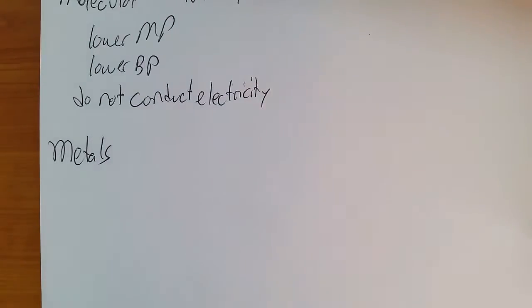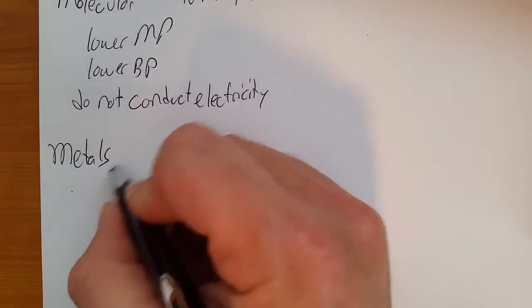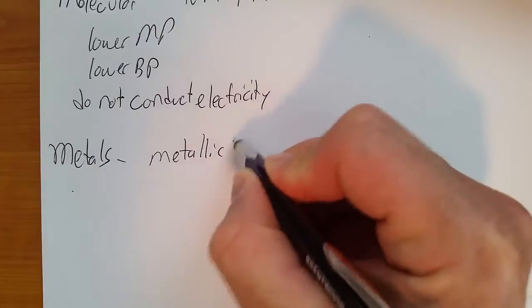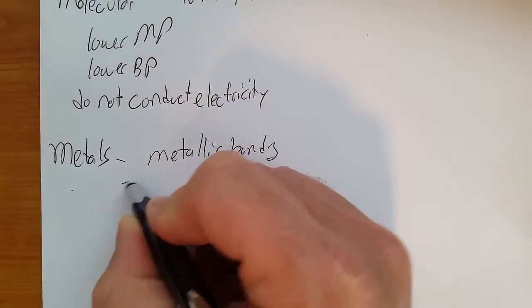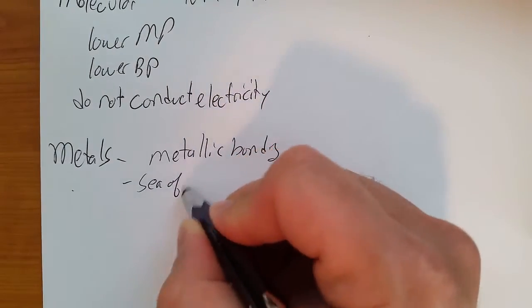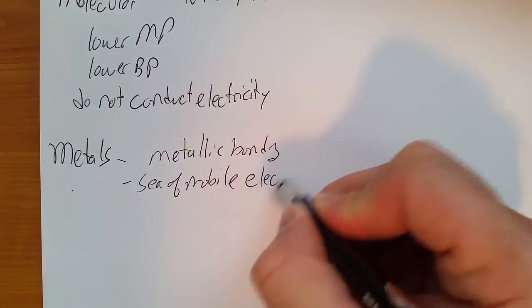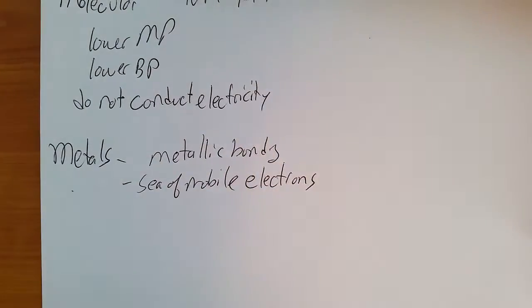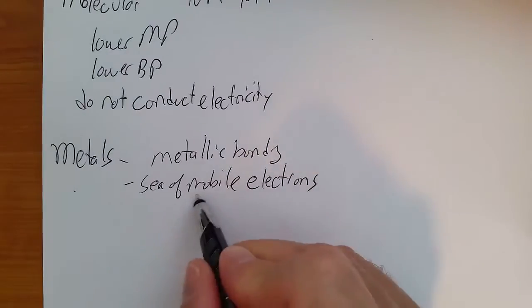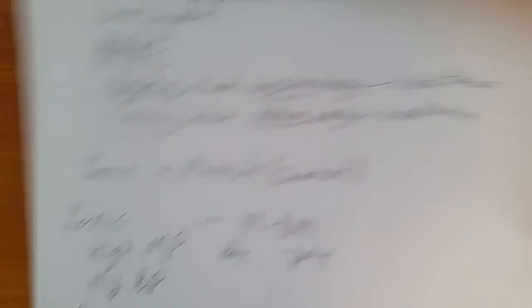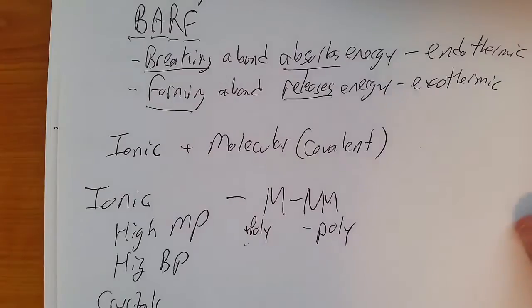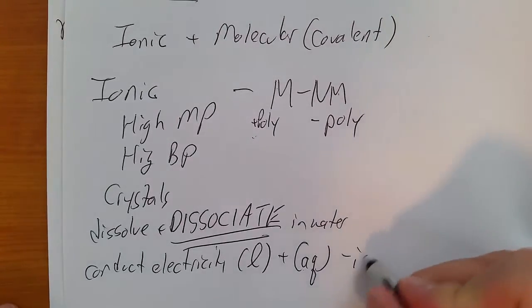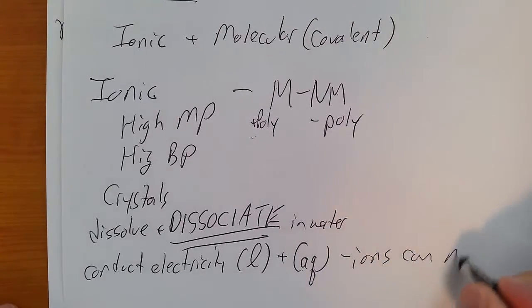Molecular covalent is going to be non-metal with a non-metal. We have metal, so if you just have a big old lump of iron, you have metallic bonding. The key phrase, remember there is a sea of mobile electrons. They conduct electricity because electrons can move. The reason why ionic substances can conduct electricity is because the ions can move. Conducting electricity is all about the movement of charge.